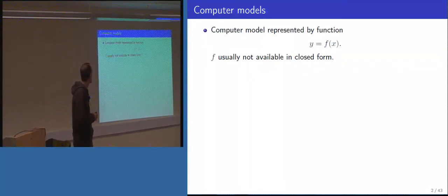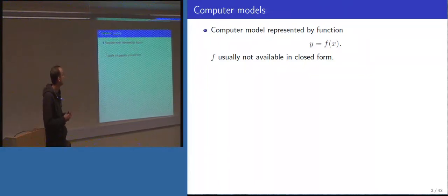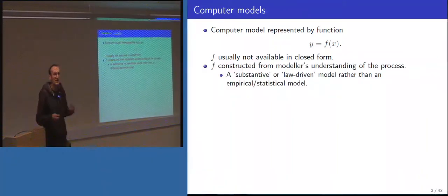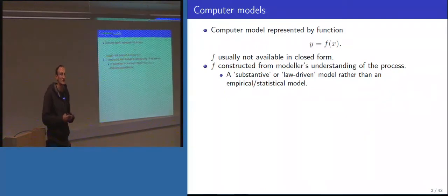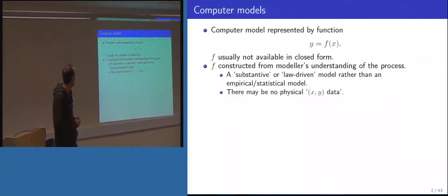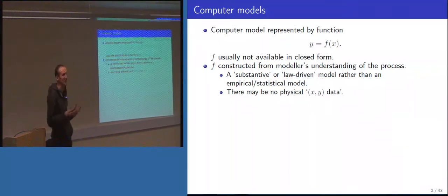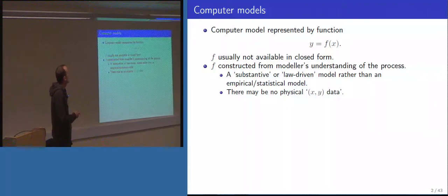In the examples I'll be talking about, y will be a scalar output, but it could be a collection of quantities, a time series, or a spatial field. We use the term 'computer model' to emphasize that this model is not a statistical model — it's based on understanding of the underlying physics. Sometimes they're called substantive or law-driven models, as opposed to empirical or statistical models. In some cases you build these models precisely because you can't do the physical experiment — you don't have any physical x, y data.